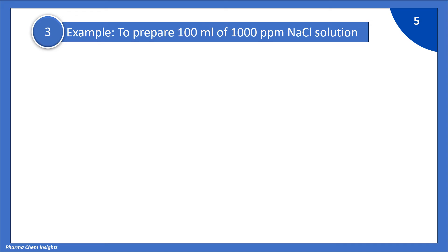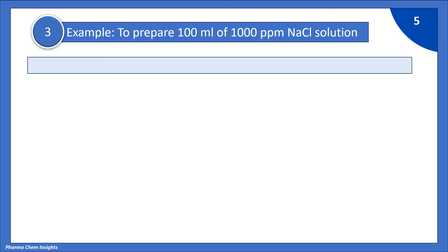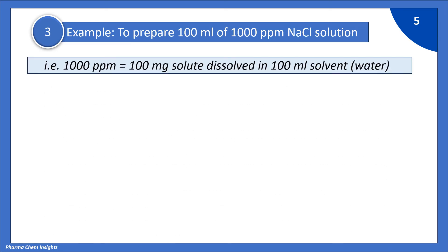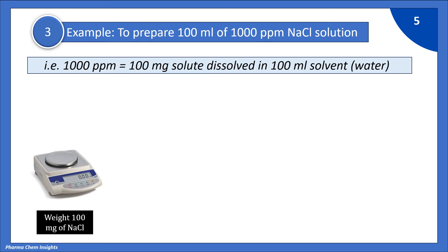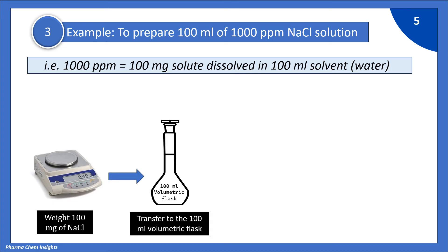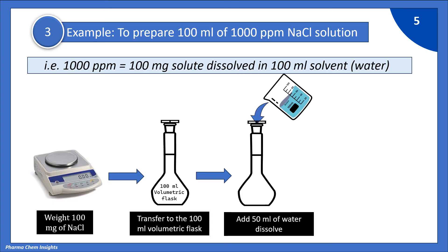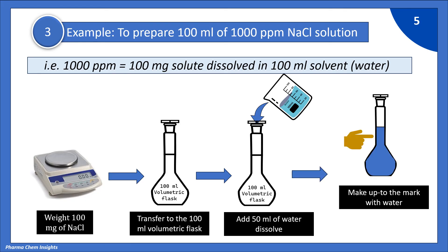Let us see the example to prepare 1000 ppm of NaCl solution of 100 ml. 1000 ppm is equal to 100 mg of solute dissolved in 100 ml of solvent, as we have seen. Weigh 100 mg of NaCl and transfer to a 100 ml volumetric flask. Add 50 ml of water and sonicate to dissolve it. Make up to the mark with water. This is your 1000 ppm NaCl solution.